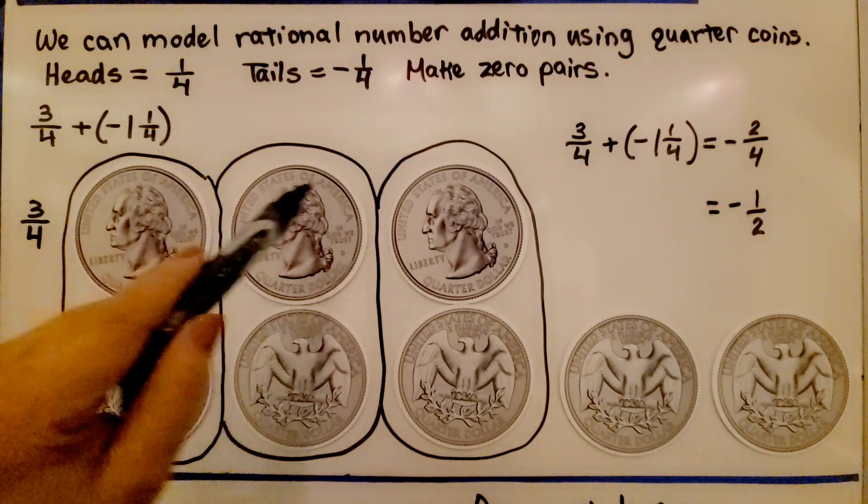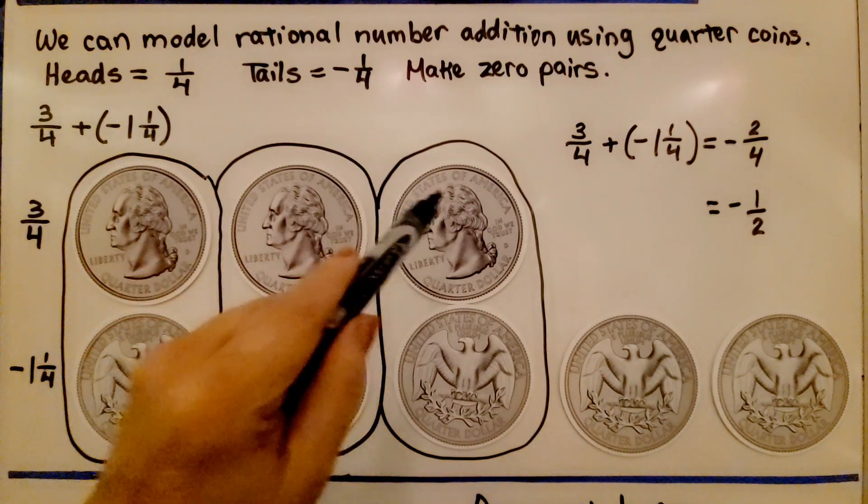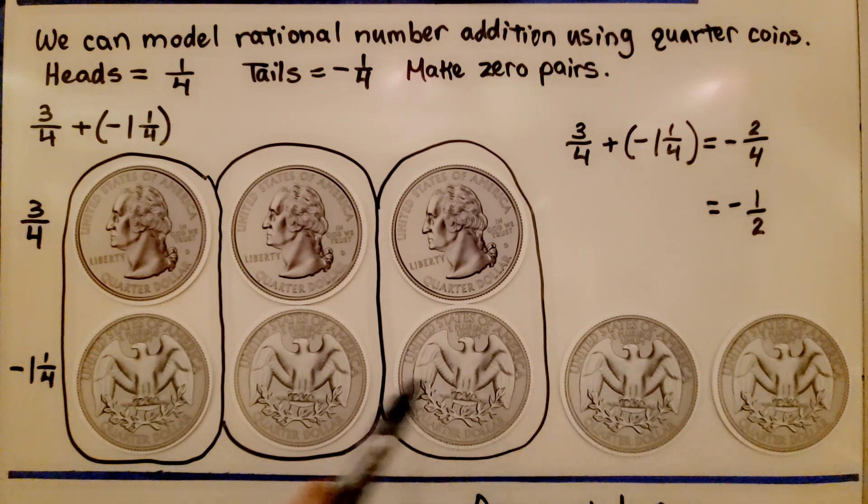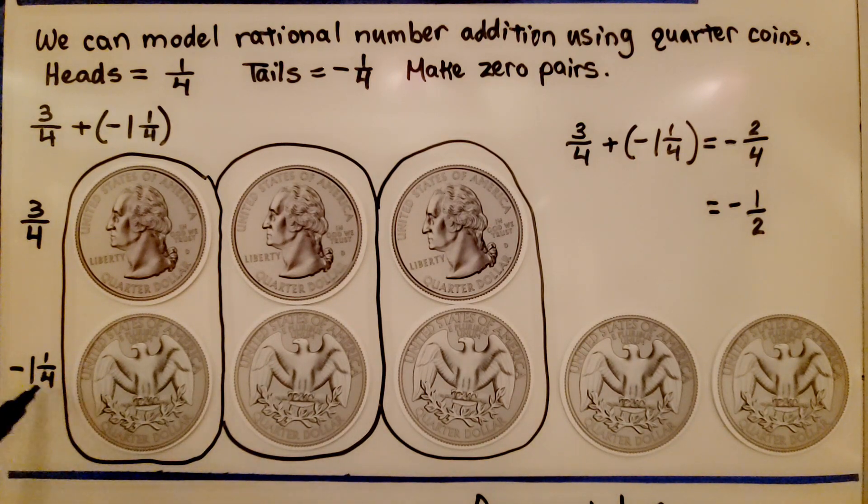If we want to add positive 3 fourths plus negative 1 and 1 fourth, we'd have three positive 1 fourth quarters showing heads and we would have 5 quarters showing tails for negative 1 and 1 fourth.